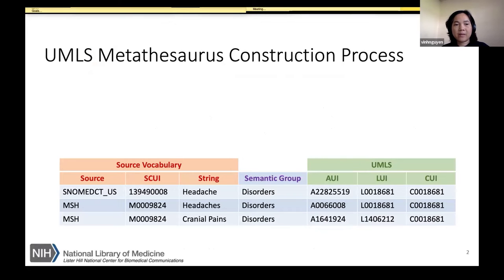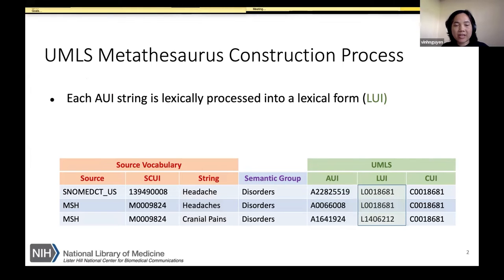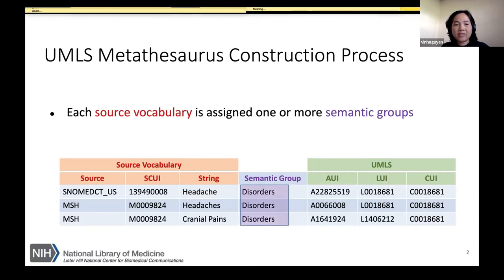Before I describe the problem we address in this paper, I will explain a few key concepts in the UMLS. The UMLS integrates over 200 biomedical vocabularies, and from each source vocabulary a string is assigned to an atom, or what we call an AUI — an atom unique identifier. For example, "headaches" and "headaches and cranial pains" are each an atom. Each atom string is lexically processed into a lexical form called a LUI by the lexical tool in the UMLS. Each source vocabulary is assigned to one semantic group, usually one but in some cases more.